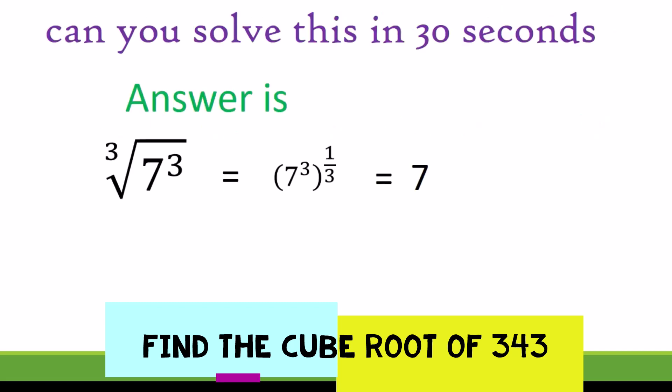So the answer should be seven. And how do we get a seven? If you multiply seven by itself three times, that's when you get 343.